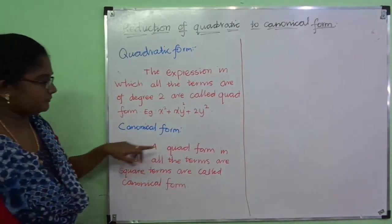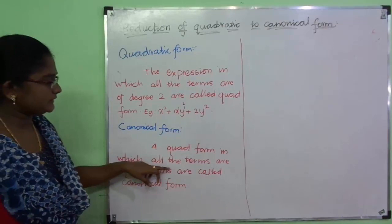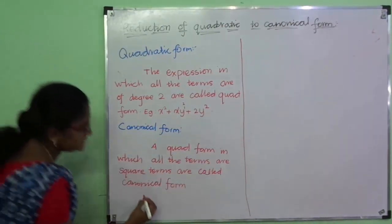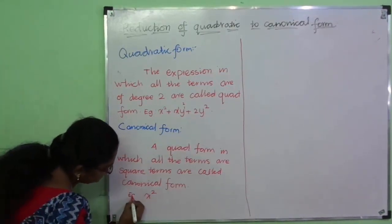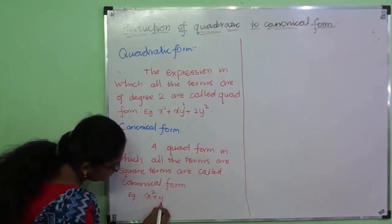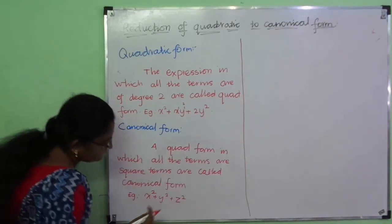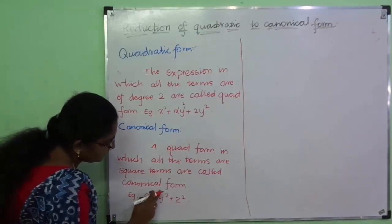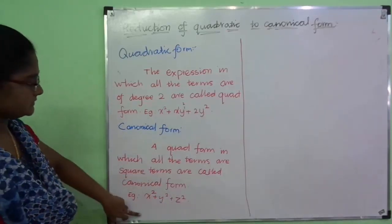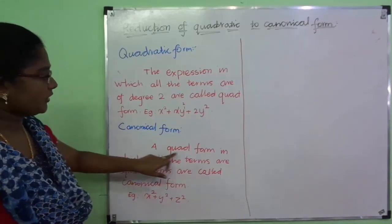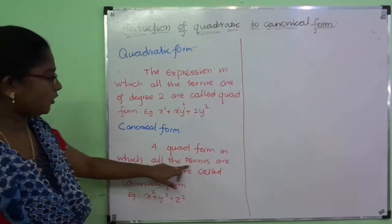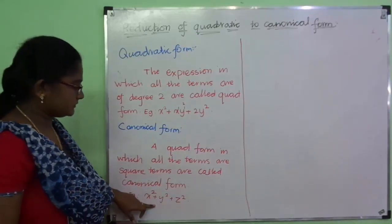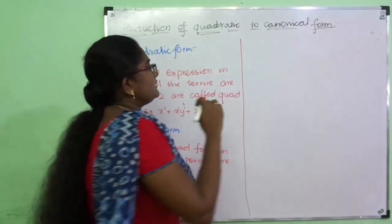Now let's know about canonical form. A quadratic form in which all the terms are square terms is called canonical form. For example, x squared plus y squared plus z squared — in this expression, x, y, and z terms all have the power square. So this expression is called canonical form, where all the terms are square terms.